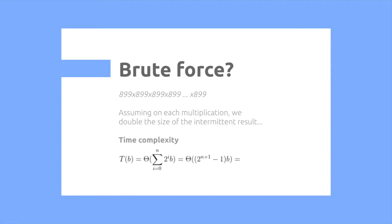Expanding this out using geometric series, we get theta of 2 to the n, b, which is exponential in nature and we are performing a linear amount of multiplications.